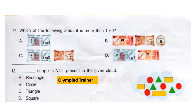Question 17: Which of the following amounts is more than Rs. 60? Option A shows Rs. 50, which is less than 60. Option B: 20 plus 10 plus 30 plus 5 equals 35, which is less than 60. Option C: 50 plus 10 equals 60, which is equal to Rs. 60. Option D: 50 plus 20 equals 70, which is more than 60. So option D is the correct answer.